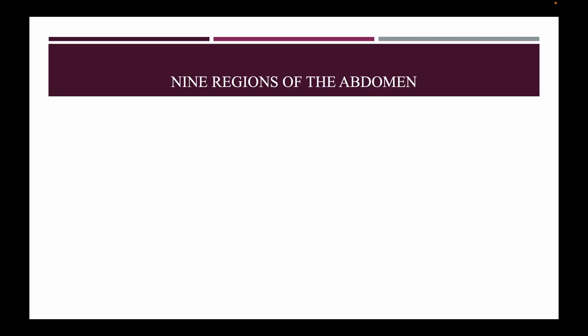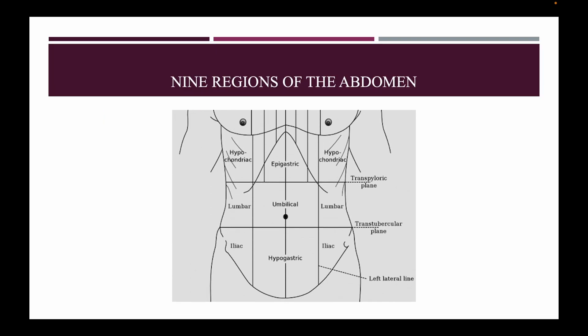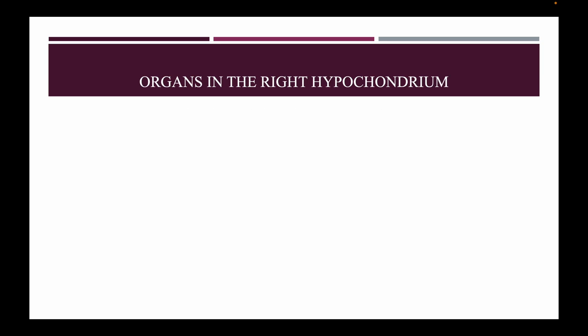Intra-abdominal lumps. The nine regions of the abdomen: right hypochondriac, epigastric, left hypochondriac, right lumbar, umbilical, left lumbar, right iliac, hypogastric, and left iliac.